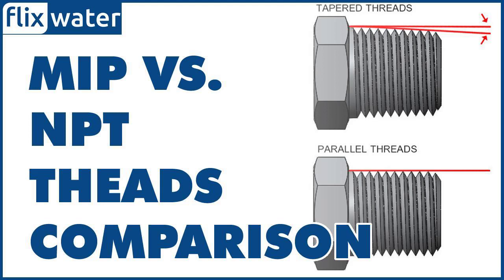NPT threads have a tapered shape while MIP fittings are straight. One of the biggest differences between NPT and MIP fittings is their shapes. NPT threads slightly taper down starting at the base, so the top of the fitting is wider than the end. MIP fittings are completely straight all the way down, so the base is the same width as the end.